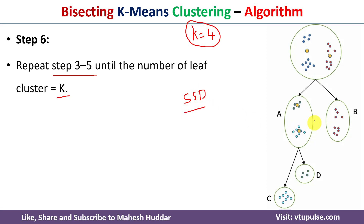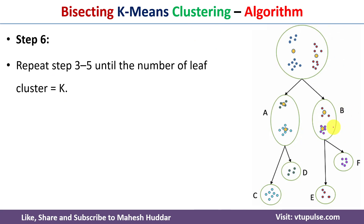We then divide that cluster into two clusters using k-means. Assuming B has the largest sum of squared distance at this point, we divide B into two clusters. Once we divide B, we get clusters C, D, E, and F — four clusters in total. Since the number of clusters now equals k equals four, we stop the bisecting k-means algorithm.